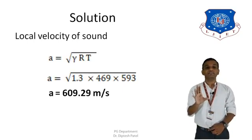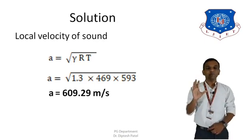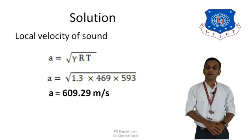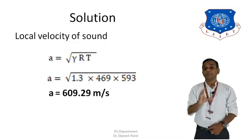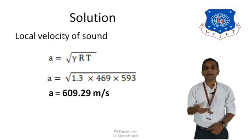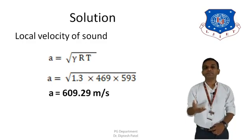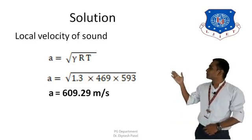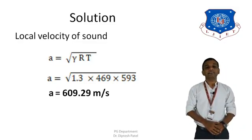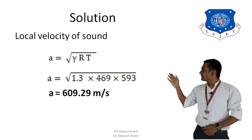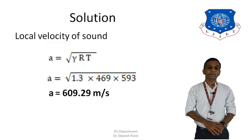First, let us find the local velocity of sound. The formula is A = √(γRT). Since we have gamma, R, and T, we can calculate it directly. Substituting the values: A = √(1.3 × 469 × 593). Going through the calculation, we get A = 609.29 m/s. This is our first finding — the local or static velocity of sound.